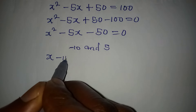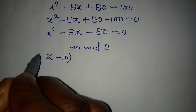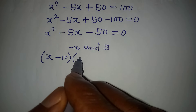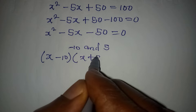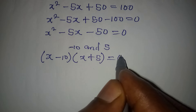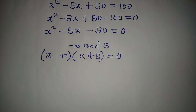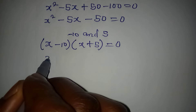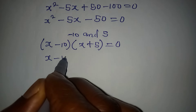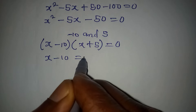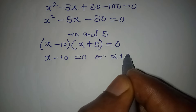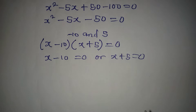So we factorize to get (x - 10)(x + 5) = 0. We can now apply the zero product rule to say either x - 10 = 0 or x + 5 = 0.